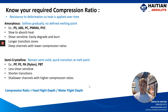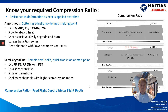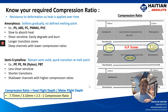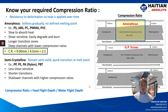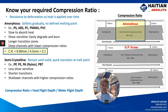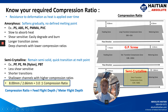The compression ratio is the difference between your feed flight depth and your metering flight depth. A general purpose screw typically has a 2.5 to 1 compression ratio, whereas an amorphous material screw is going to be more like 2 to 1, and a semi-crystalline material will be 3 to 1 or a little bit higher. It's important to understand the types of materials you're running so you have the right compression ratio on your screw.